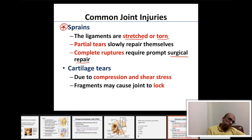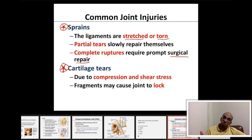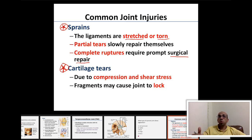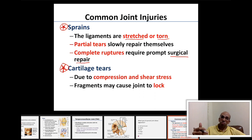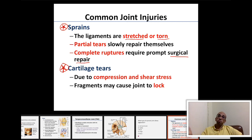Another type of joint injury is cartilage tears, usually due to compression or shear stress. The problem with cartilage tears is that cartilage is very hard to heal because it is avascular — it has no blood vessels, so it receives very minimum amounts of nutrients and oxygen, making it much more difficult to heal than bone tissue.